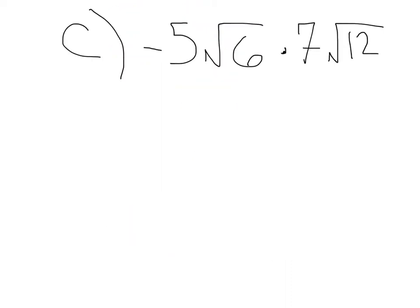All right, all right. Let's do one more. Got to give the people what they ask for. Here we have negative 5 square root of 6 times 7 square root of 12. First let's start with these outside numbers.